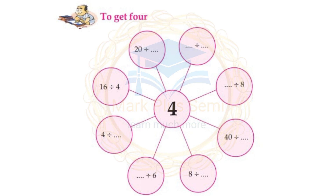32 divided by 8. Next: 68 divided by 8 equals 4. Division is closely connected to the multiplication table — when we do division, we use the multiplication table.